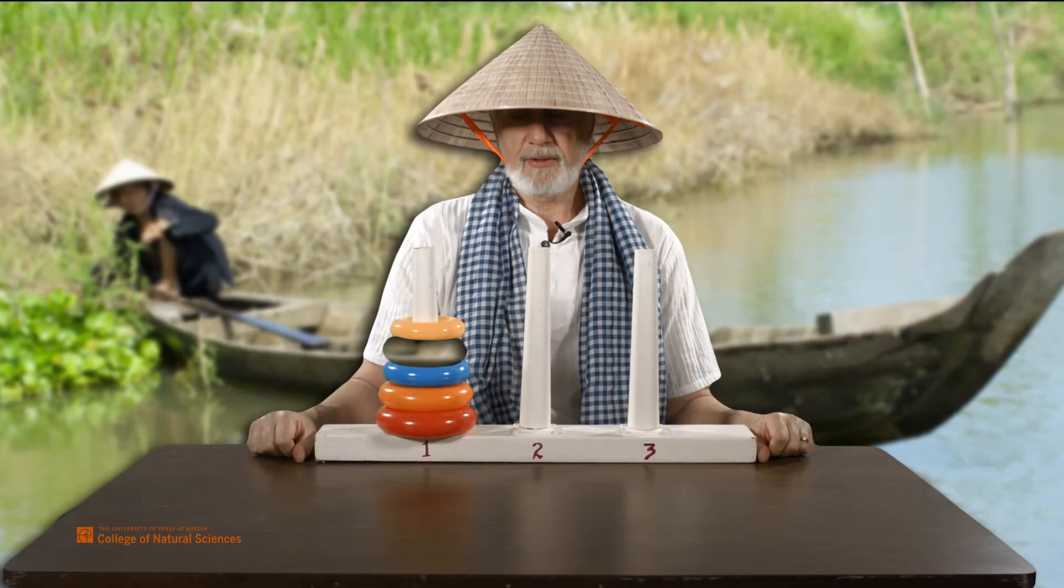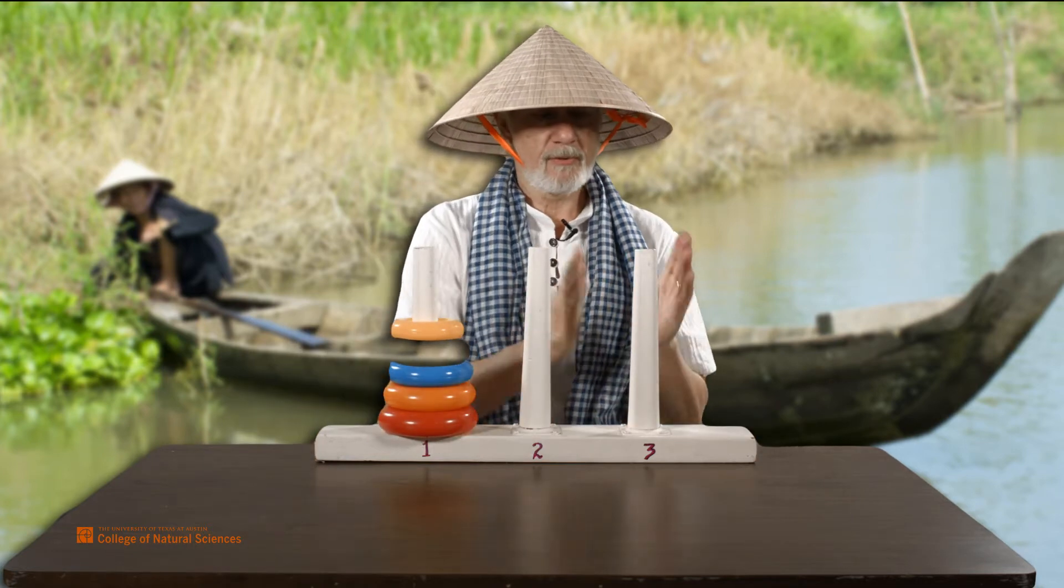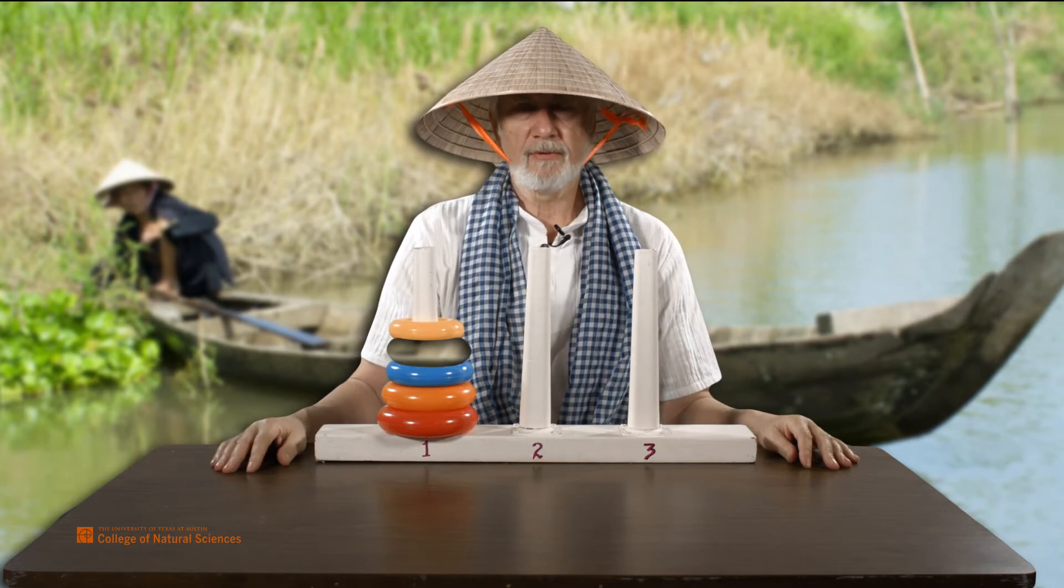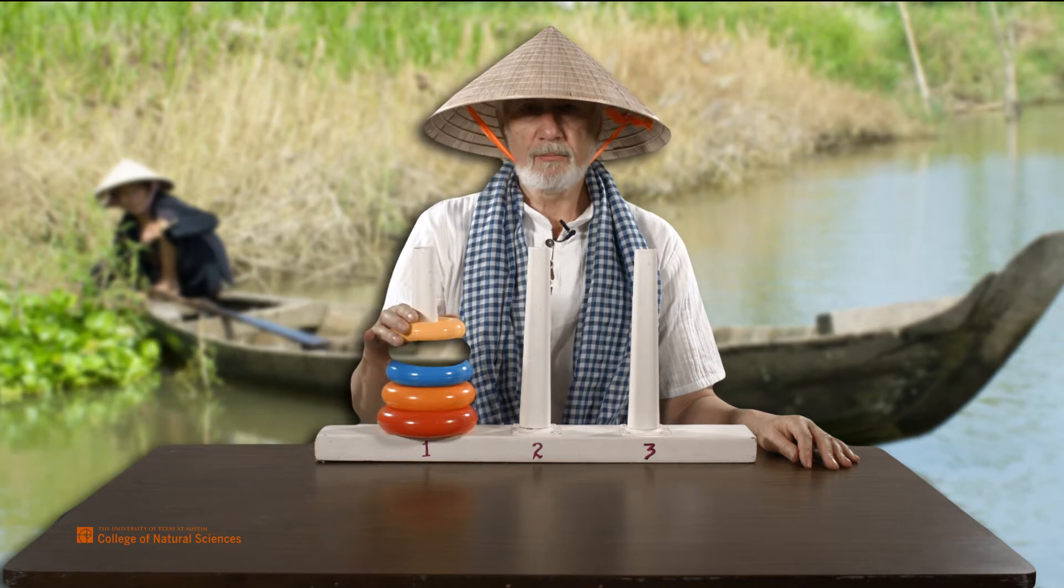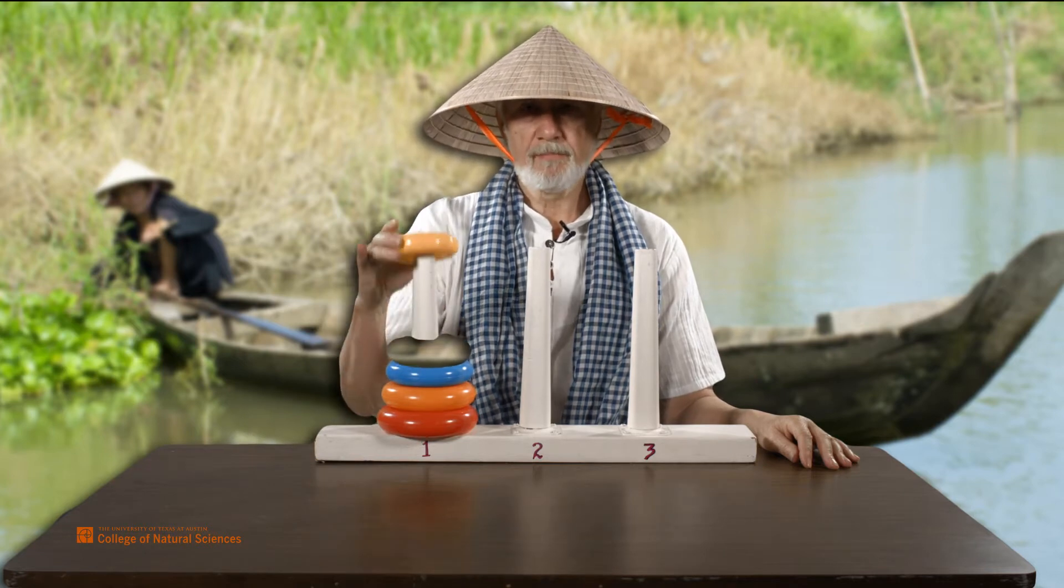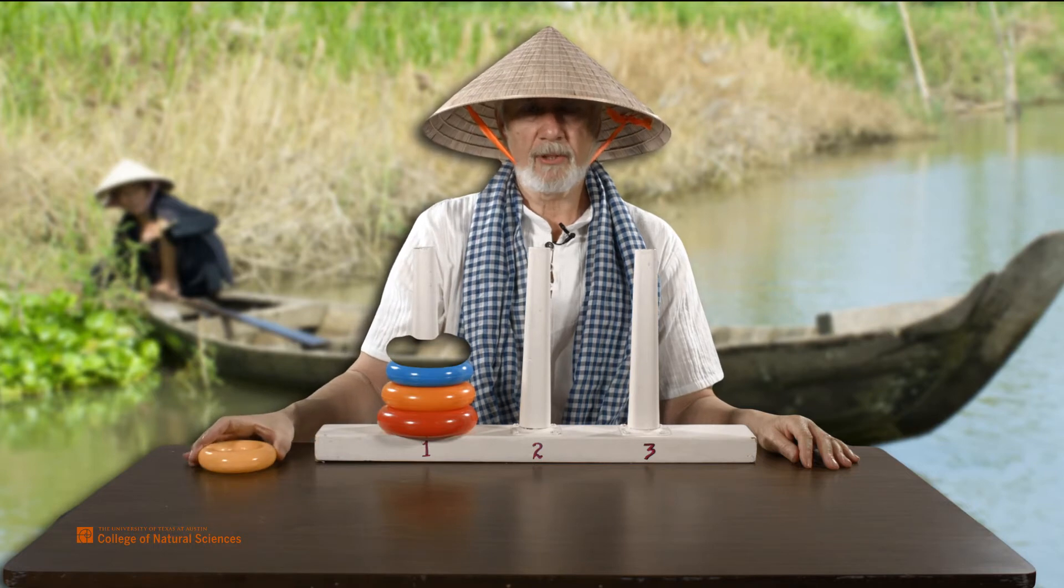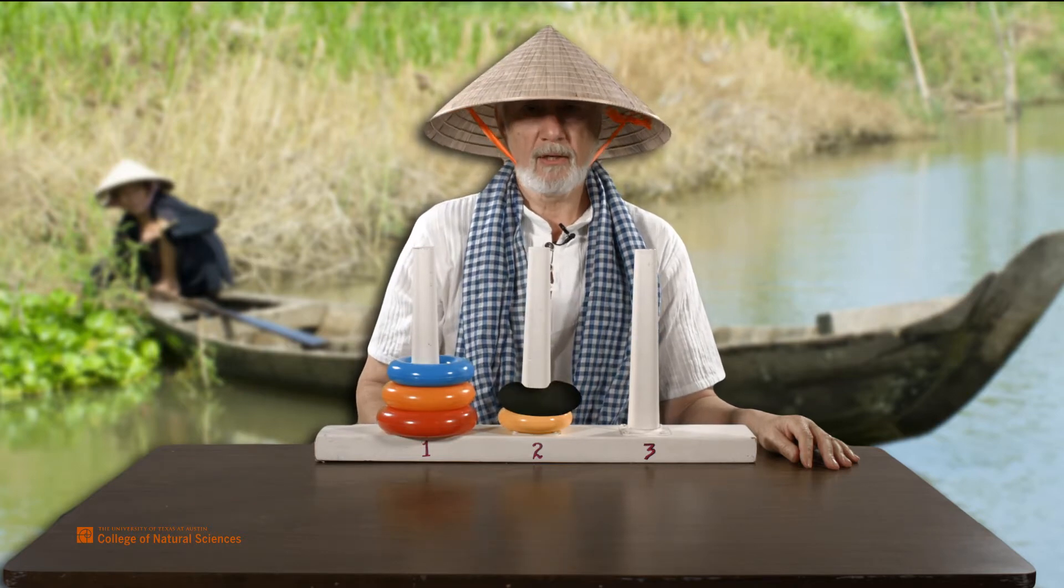Our problem is to move these 5 disks over to this pole consistent with the rules of Towers of Hanoi. Recall that the rules say I can only move one disk at a time, I can never just leave a disk off of a pole, and I can never put a smaller disk underneath a larger disk.